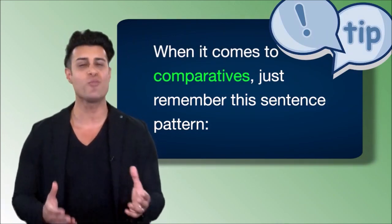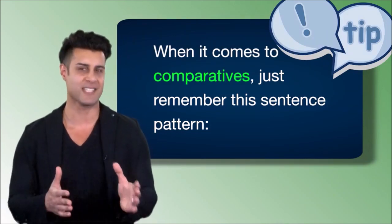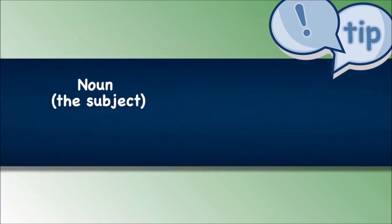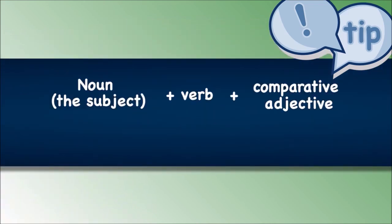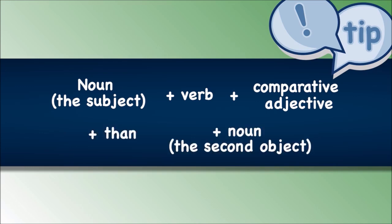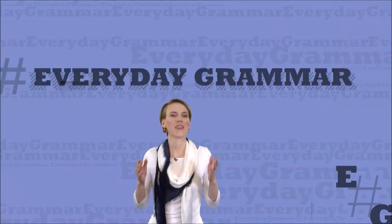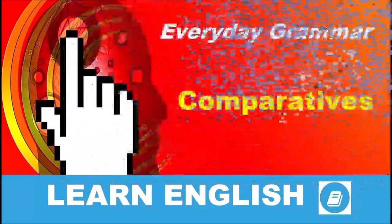When it comes to comparatives, just remember this sentence pattern: Noun (the subject), followed by verb, plus comparative adjective, plus than, plus noun (the second object). And that's Everyday Grammar.